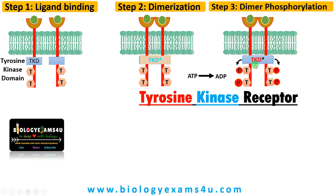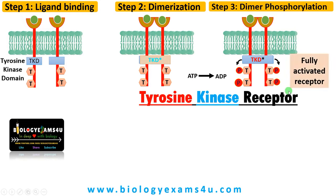ATP becomes ADP as the kinase enzyme phosphorylates the hydroxyl group of tyrosine residues. That is why this receptor is called a tyrosine kinase receptor. This produces a fully activated receptor with phosphorylated tyrosine residues.